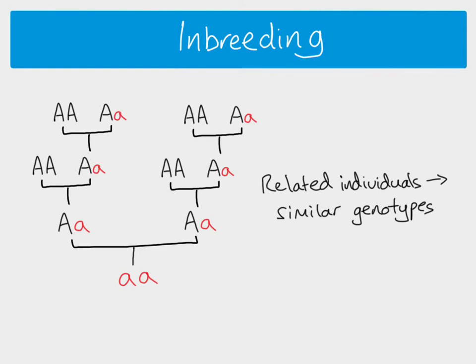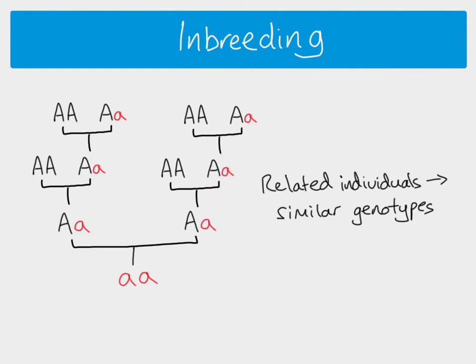Inbreeding is when closely related individuals breed together. If you look at one side of the family, these are all related to each other, and you can see there's a very high proportion of individuals with the recessive allele. So if any of these individuals were to breed together, the chance of that recessive allele being expressed is quite high — much higher than if you were to breed one of those individuals with an unrelated individual from another family, where that recessive allele may not exist at all.